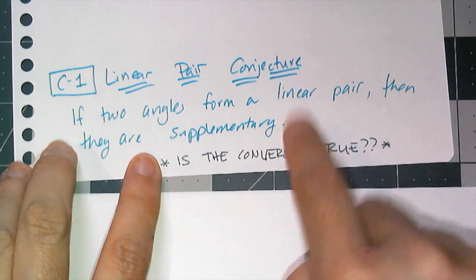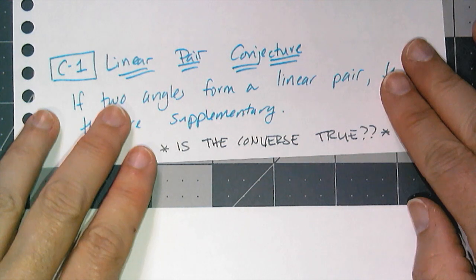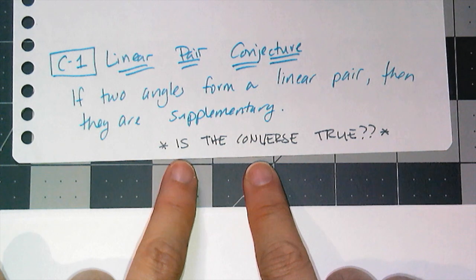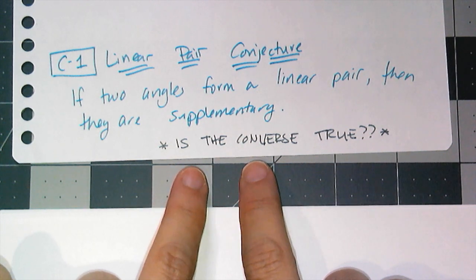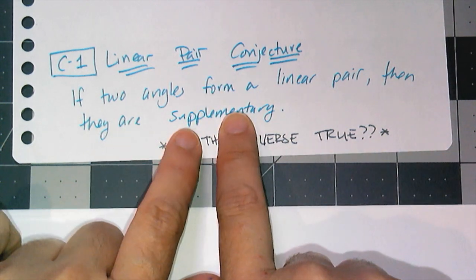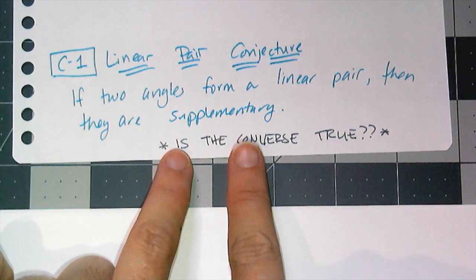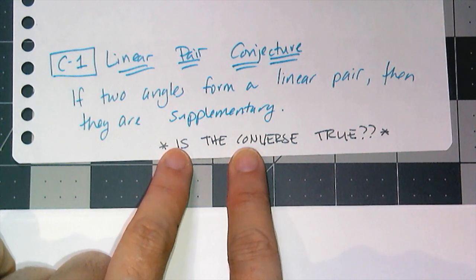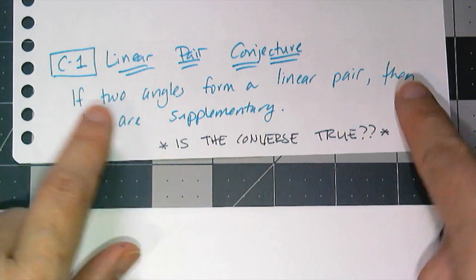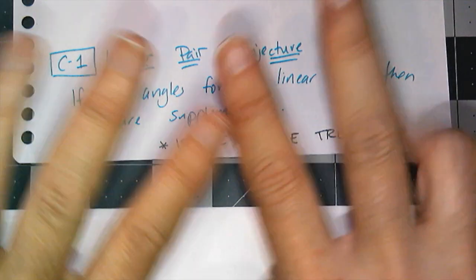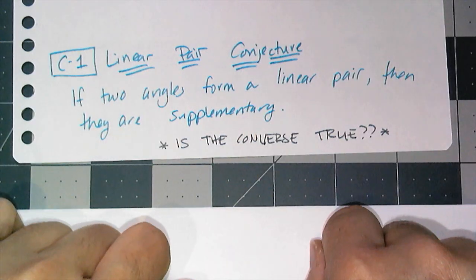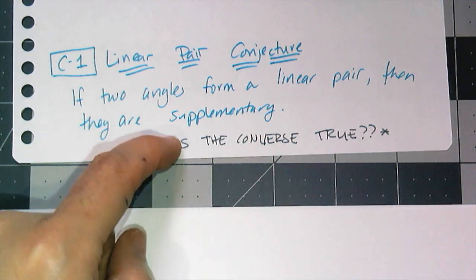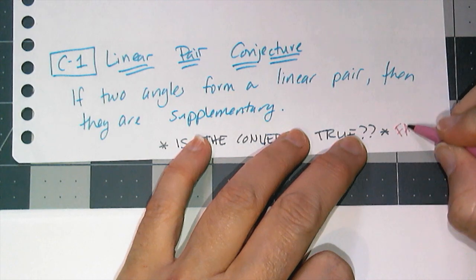Whenever I come up with a conjecture, I always want to see if the converse is true. The converse is when I switch the hypothesis and the conclusion. So the converse would read: if two angles are supplementary, then they form a linear pair. I know that's not true, because supplementary angles just add up to 180 — there's nothing about them actually being connected in any way or sharing anything. So this conjecture's converse is false.